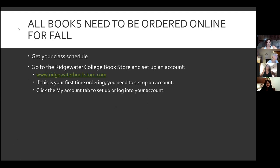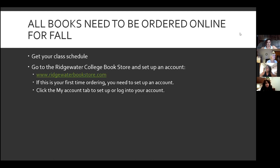First of all, all books are going to be ordered online — you'll be able to do that on our website. The first thing you're going to need is your class schedule, which you can get in e-services and print out. If you need help with that, we're happy to help you. Then you'll go to our college bookstore website from the Ridgewater page and set up an account.